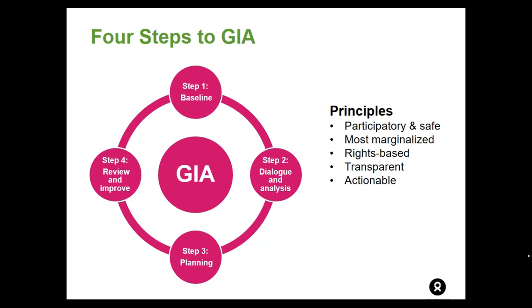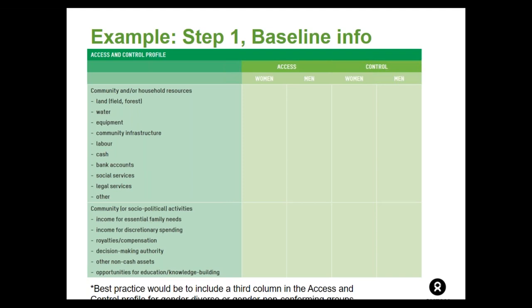Here's an example of one of the suggested ways to organize data around access to and control over resources. It's a simple chart showing a slice of a potentially longer list of categories in the first column. Best practice would be to include a third column on the right for gender non-conforming or gender diverse individuals. As a complement to the narrative, we developed a mobile application that can be used for step one to collect baseline information, generating useful reports for subsequent steps. We're moving cautiously with the app since we're not yet sure of the business model that can sustain it over time and how to make it available to a range of stakeholders.